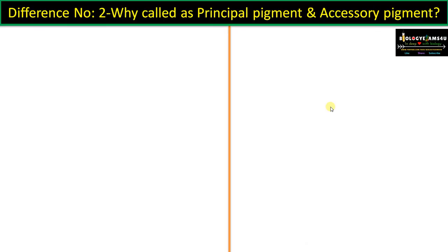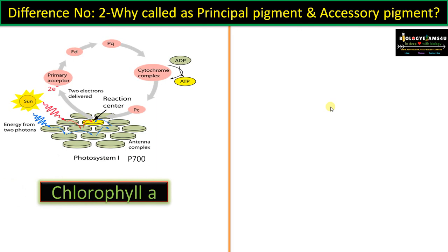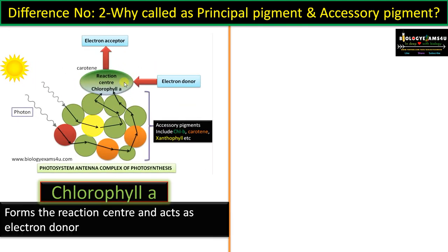Moving to difference number two: why chlorophyll A is called the principal pigment and chlorophyll B the accessory pigment. During the light reaction of photosynthesis, pigments are grouped together to form a photosystem. From that photosystem, an energized electron is received by different electron carriers and ATP is produced. Chlorophyll A is called the principal or primary pigment because it acts as the electron donor during the light reaction of photosynthesis.